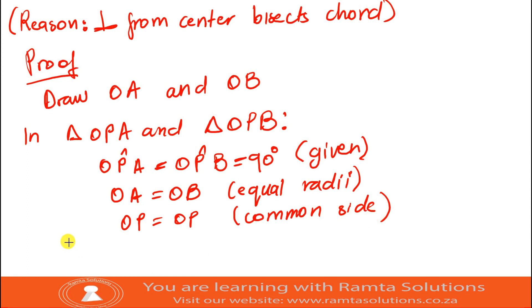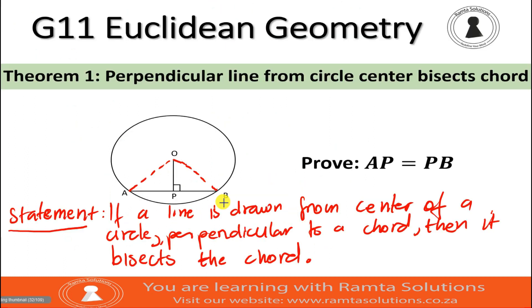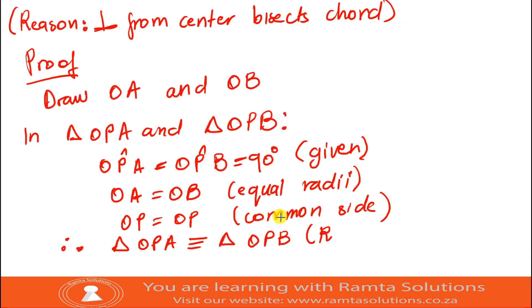Now, we can say, therefore, triangle OPA is congruent to triangle OPB. Pay attention to the order. Why do we say this? It's because we see this is 90 degrees. So, it's R and equal radii. When I look at the radii here, they are the hypotenuse of these right angle triangles. So, RHS is the rule.